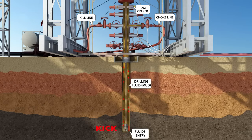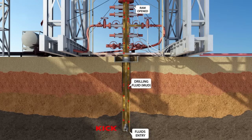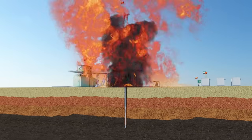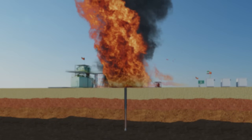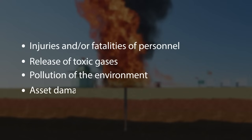If all of the well control barriers failed — such as human barriers, BOP equipment barriers, and system barriers — and the BOP leaked while circulating the kick out, this could lead to uncontrolled flow of formation fluids and possibly a blowout. A blowout has massive catastrophic consequences, such as injuries and/or fatalities of personnel, release of toxic gases, pollution of the environment, asset damage, and damage of ADCO's image and reputation.